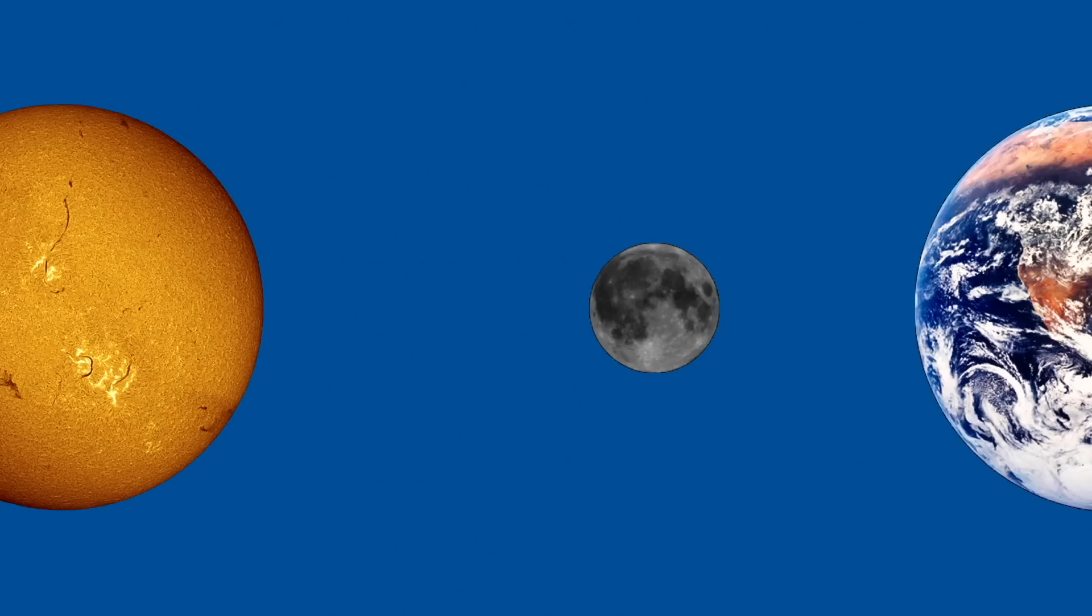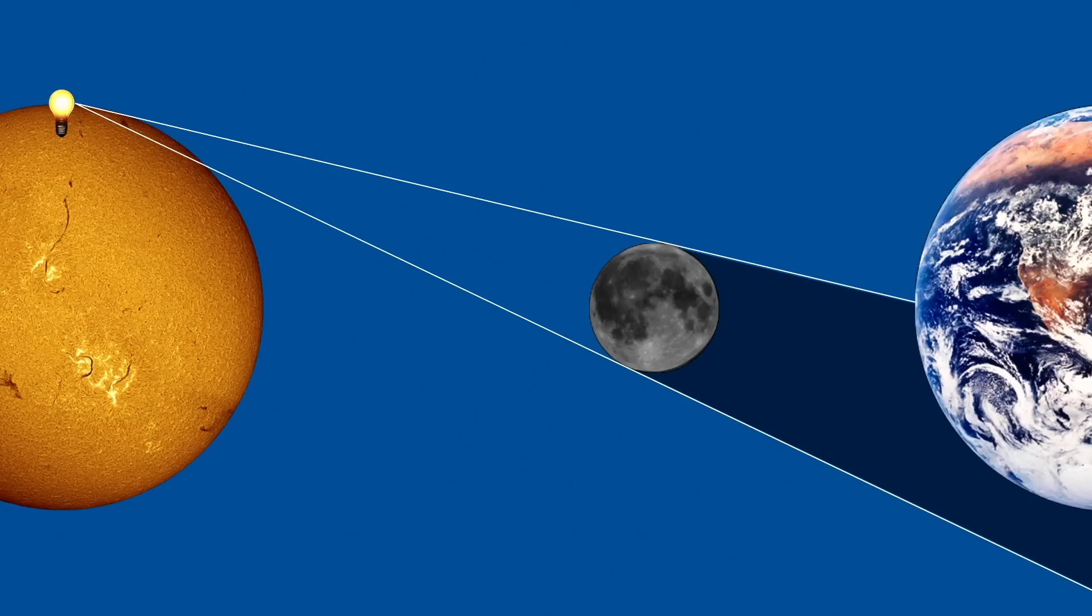The sun gives off light from every point on its surface, and this light moves out in all directions. But let's simplify that a bit and look at extremes. For example, look at light coming from just the top of the sun. We'll put a light bulb there to represent this. Again, light from this bulb goes out in all directions. But we're only interested in the light that heads towards the moon and earth. Light passing the moon is blocked and casts a shadow. Anyone in this shadow cannot see the light bulb.